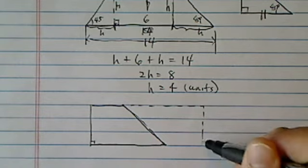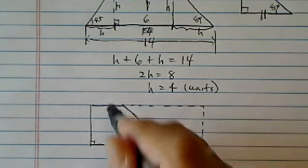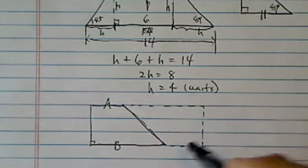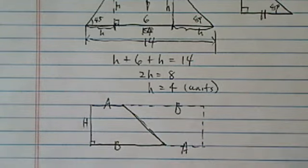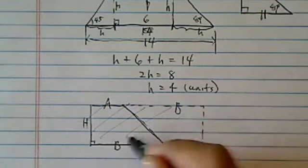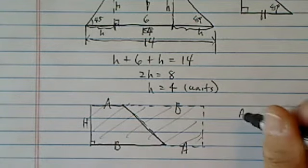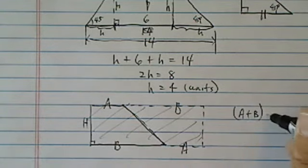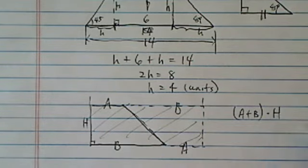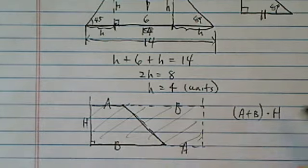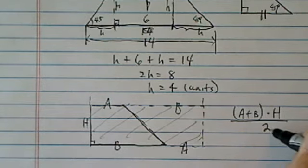Now, watch this. If you flip this trapezoid upside down, let's call this A, this is B. If you flip it upside down, A becomes here and B is here, height is still here. Then this area, the whole thing becomes length, which is this chunk A plus B times height. That's the area. Since it's twice what we need for the trapezoid, we divide it by 2. This is the area for trapezoid.